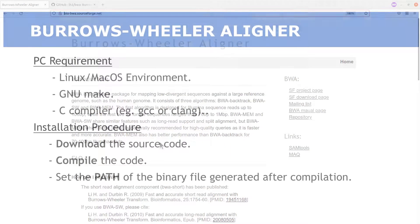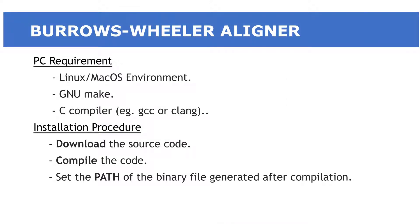To use or install BWA you need to have a Unix-like operating system — I'm referring to Linux or macOS. The procedure I'll be using is for a Linux system, but the same procedure works for macOS as well. The steps are: first download the source code in zipped format, extract the contents, compile the source code to get a binary file, then set a path to that binary so we can run it from any terminal session.